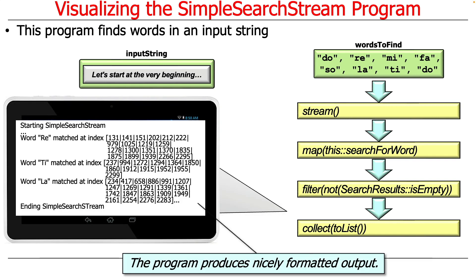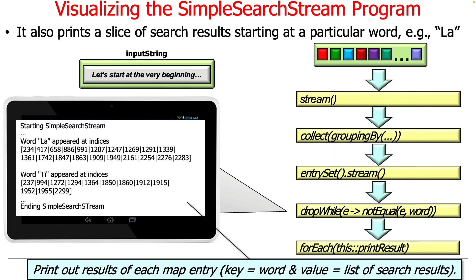Here's what the output looks like: for each of the words of the musical notes, it'll say where that word appeared as an offset into the input string. So the word "ray" shows up at index 131, 141, 151, and so on and so forth.